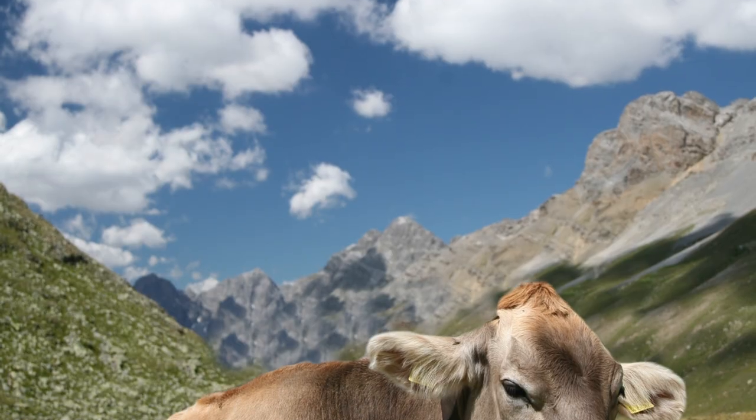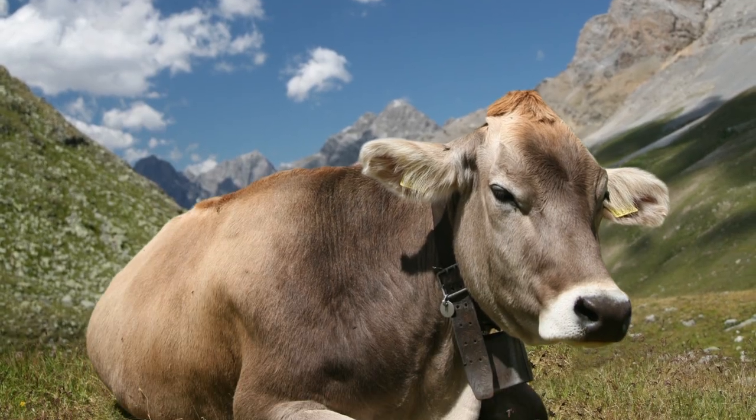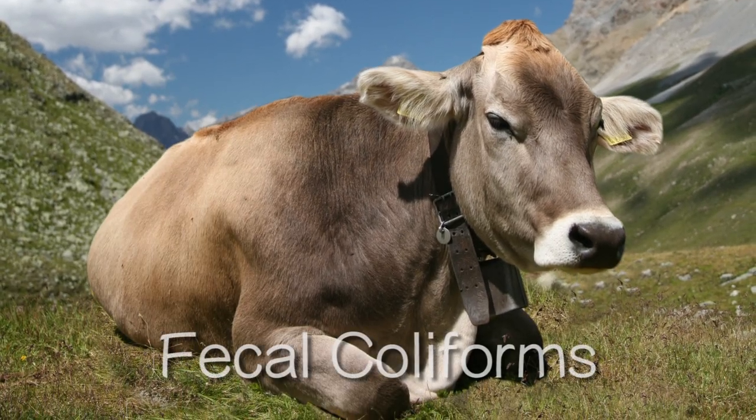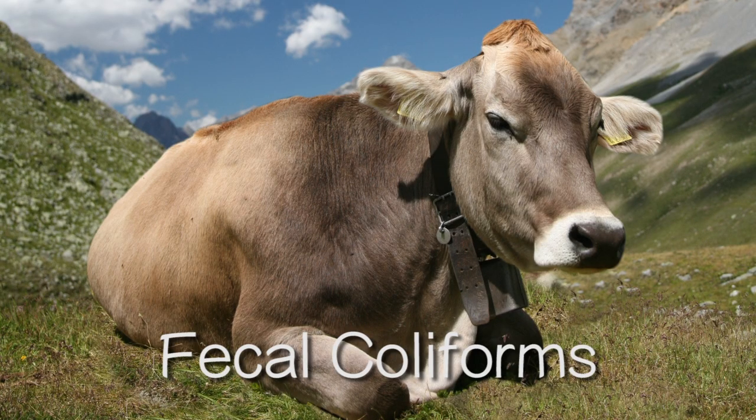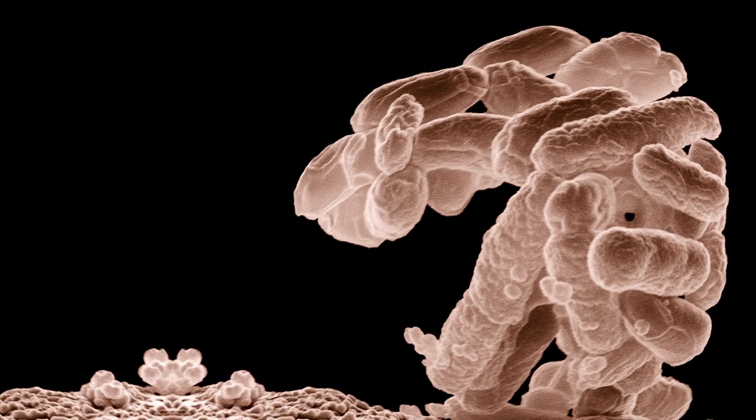Many of which live in the intestines of warm-blooded animals. These are called the fecal coliforms, and the most common fecal coliform in the human intestine is E. coli.